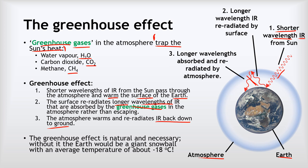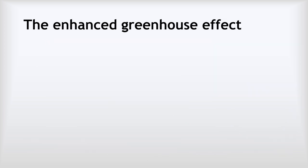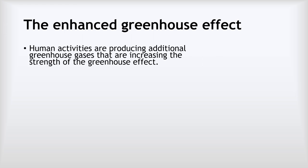The greenhouse effect is natural and necessary. Without it the earth would be a giant snowball with an average temperature of about minus 18 degrees celsius and very little life would be possible. The problem is that the greenhouse effect is getting stronger due to human activities, which leads us to the enhanced greenhouse effect — producing additional greenhouse gases increasing global warming.